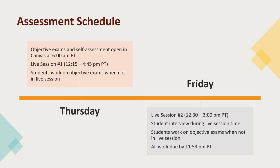Academic Readiness Assessments run Thursday to Friday. At 6 a.m. Pacific time on Thursday, all the objective exams and the online learning readiness self-assessment open for all applicants. The first live session for full-time and single course English applicants takes place beginning at 12:15 p.m. Pacific time on that same Thursday.